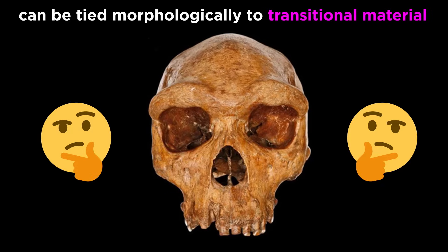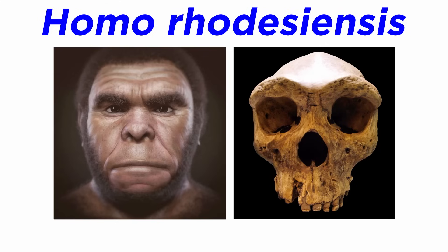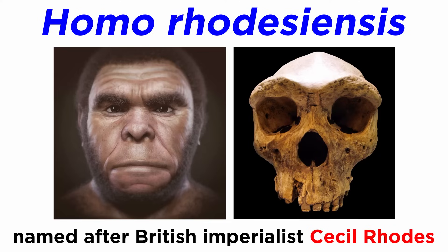One can quickly see how this gets rather complicated. The Homo sapiens version of Homo heidelbergensis, Homo rhodesiensis, is not much better. Culturally, Homo rhodesiensis has deep colonial roots, being named after British imperialist and diamond magnate Cecil Rhodes.